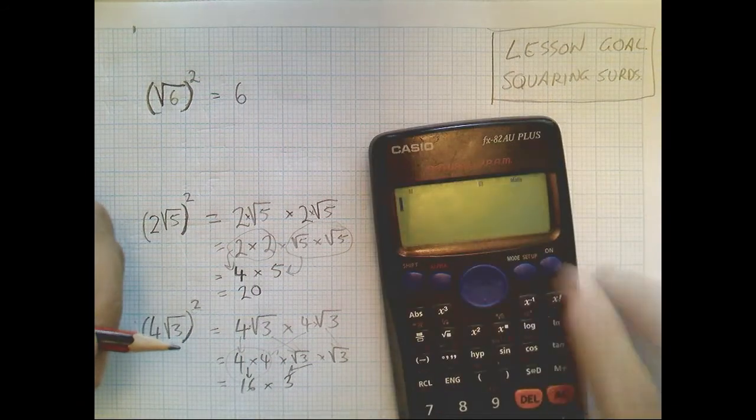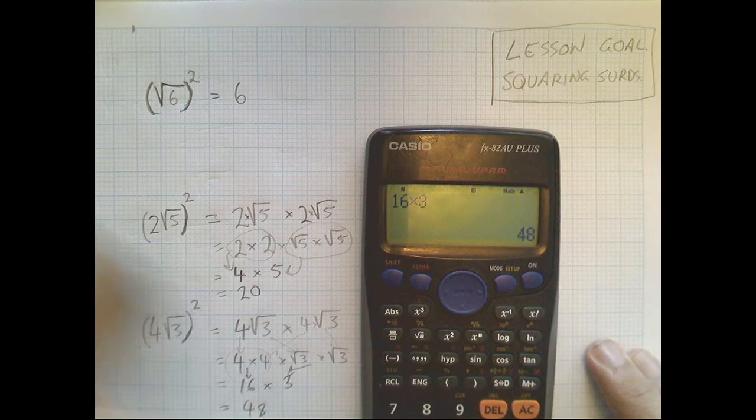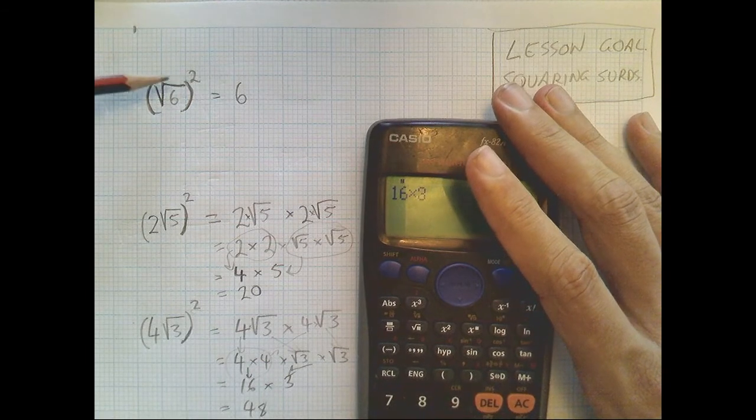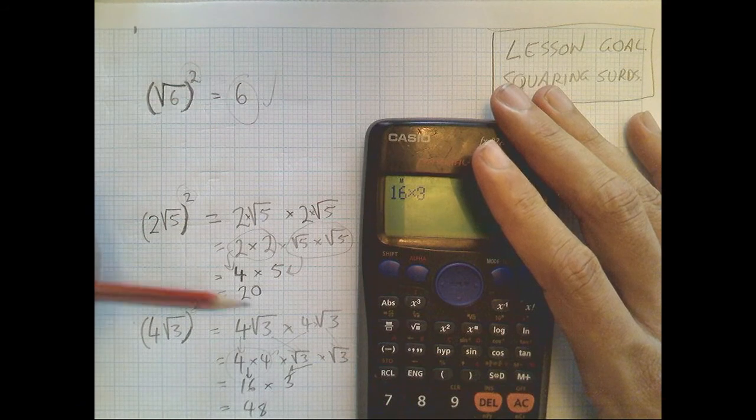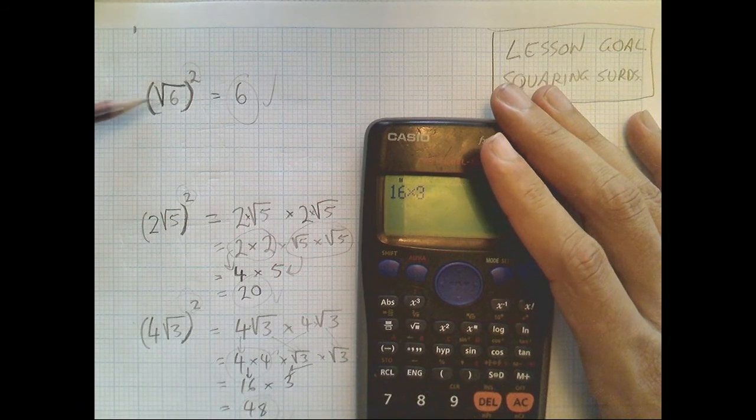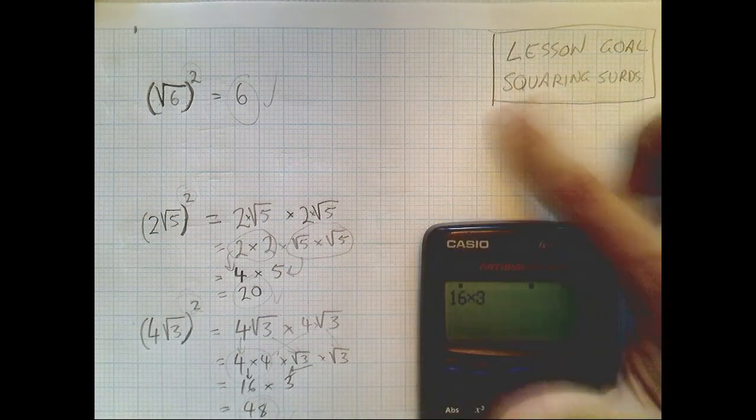Don't bother trying to do it in your head. Why not use your calculator? That's going to be forty-eight. Okay, so important to note as well, whenever you're squaring a surd, your answer's going to be a whole number. There's not going to be a surd in the answer if you square a surd. Okay, that's it. That's squaring surds.